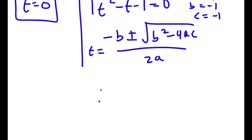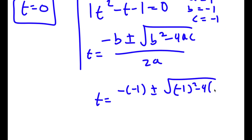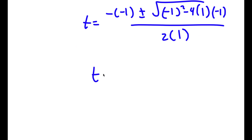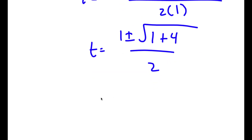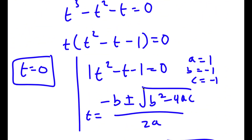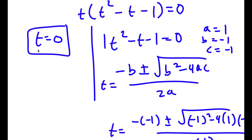In this case a equals 1, b equals negative 1, and c equals negative 1. So t equals negative (negative 1) plus or minus the square root of (negative 1) squared minus 4 times 1 times (negative 1), all over 2 times 1. This simplifies to 1 plus or minus the square root of 1 plus 4 over 2, which gives 1 plus or minus the square root of 5, all over 2.